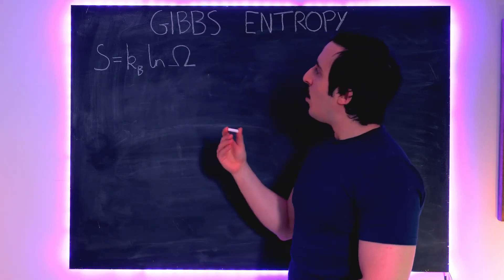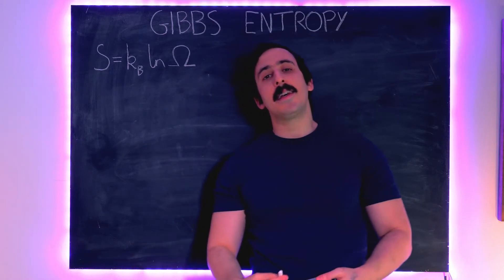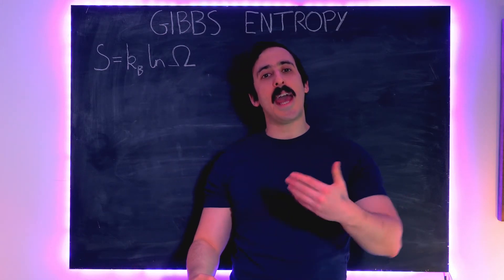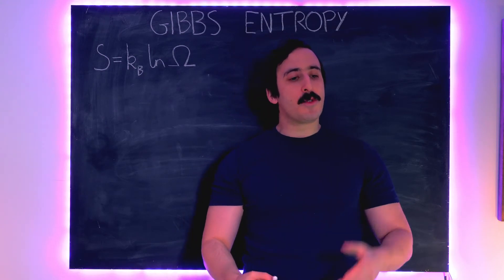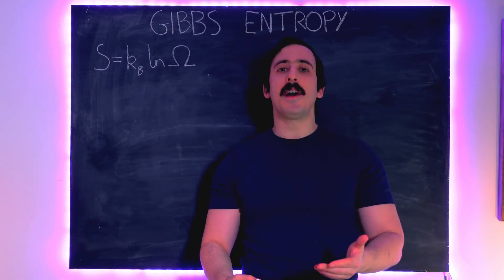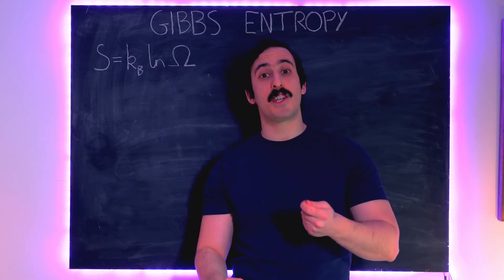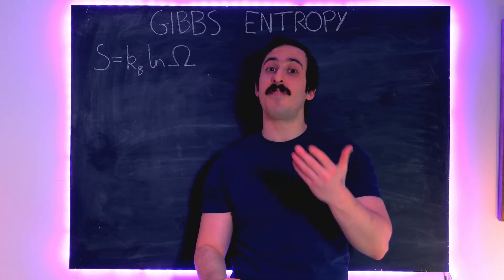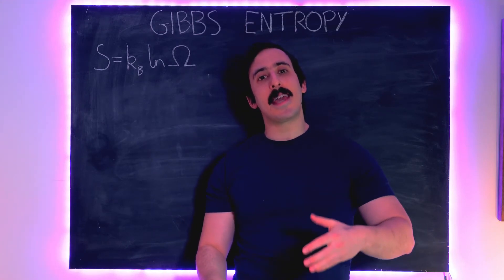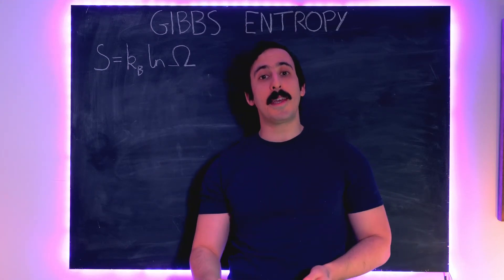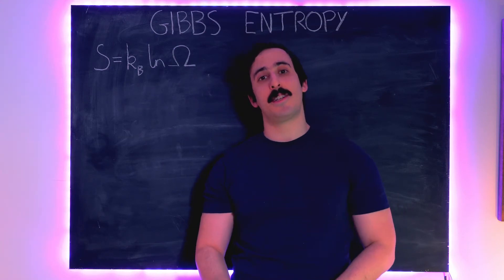It wasn't until Gibbs — Josiah Willard Gibbs — that formally the connection between entropy and probability was discovered. This is also a precursor to looking at the information theory version of entropy, which a lot of people think is actually the most fundamental version of entropy. Without further ado, let's get into the proof as put forward by Gibbs and look at the probabilistic interpretation of entropy.